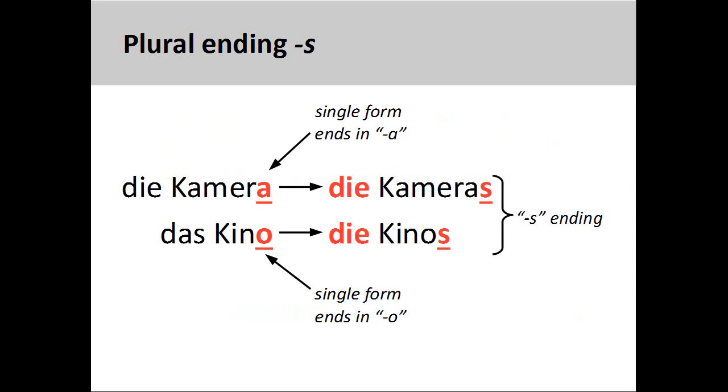The fifth group consists of nouns that, like English, add an -s for a plural ending. Most of these nouns, many of which end in an A or O, are of foreign origin and have been adopted into German. The noun Kamera, camera, is an example, Kameras. The noun Kino, movie theater, is another, Kinos.